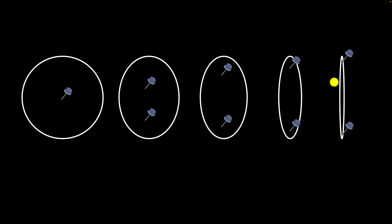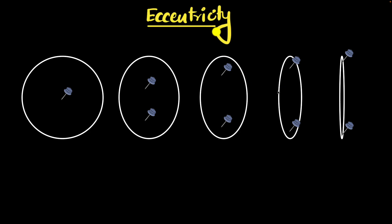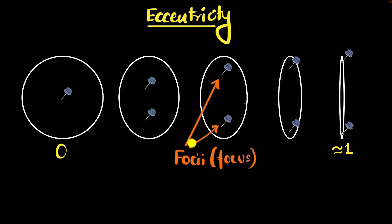There's a particular mathematical term we use to talk about how elliptical — how squished out — an ellipse is. We call that eccentricity. It's a number between 0 and 1. If it's a circular path, its eccentricity is 0. If you squish it out so much that it almost looks like a straight line, its eccentricity is 1. And these two thumbtack points are mathematically called the foci — foci is plural, focus is singular. When it comes to a circle, both foci are at the same point, which becomes the center of the circle.